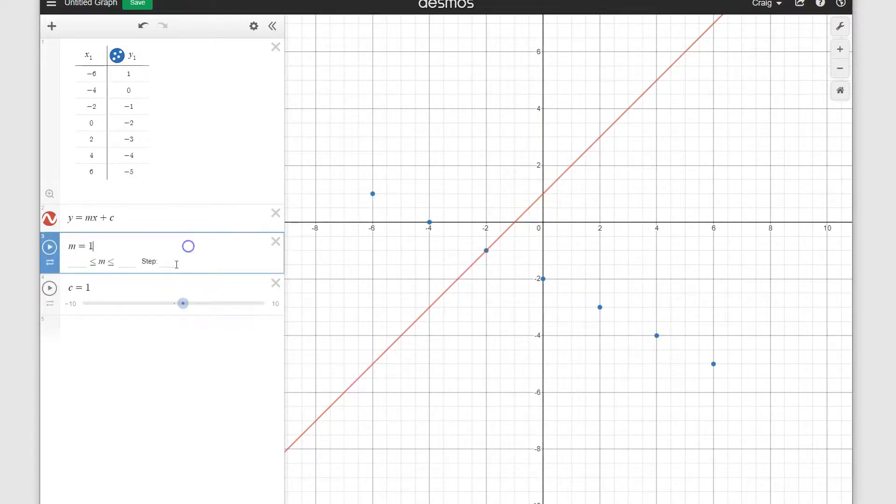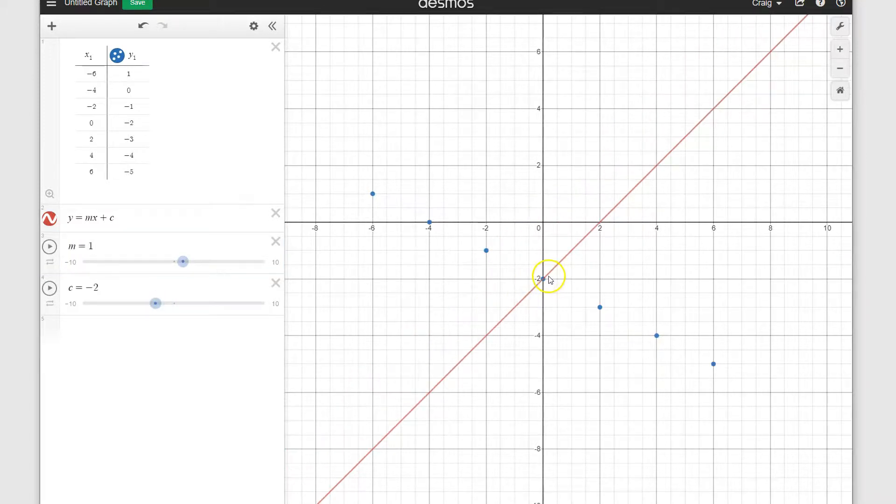So I'm going to start reducing it. Done. So the line itself passes through this y-intercept here now, (0, -2).